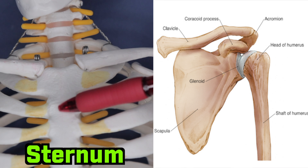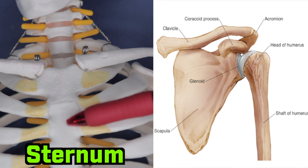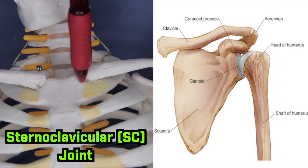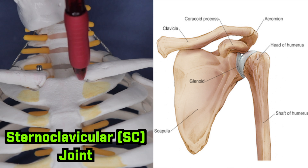To review the bones, I have my friend — I actually don't have a name for this thing, so if you guys have any name suggestions, just drop them below in the comment section. Let's start off anteriorly with this flat chest bone known as the sternum. The upper portion of the sternum is known as the manubrium and it articulates with the medial clavicle to create the sternoclavicular joint.